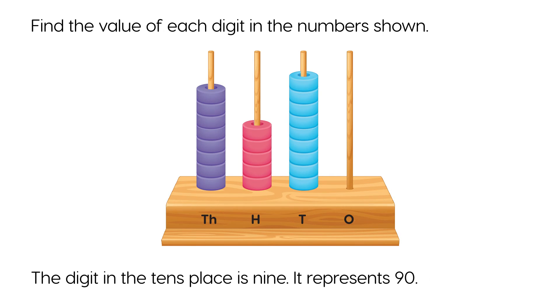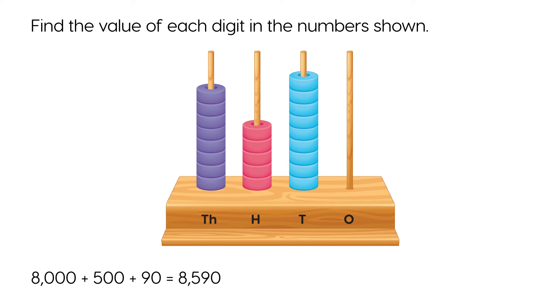The digit in the tens place is 9. It represents 90. 8000 plus 500 plus 90 equals 8590.